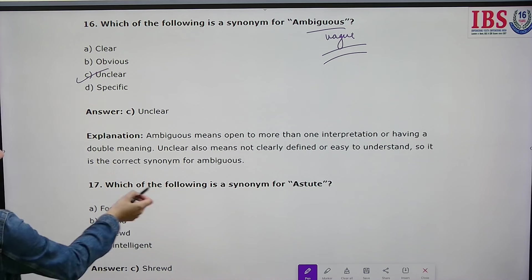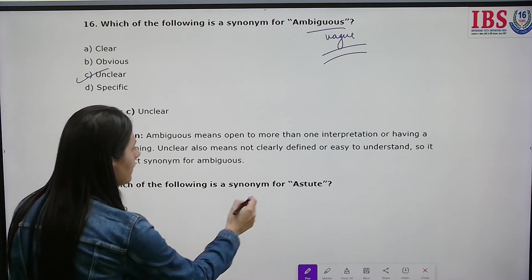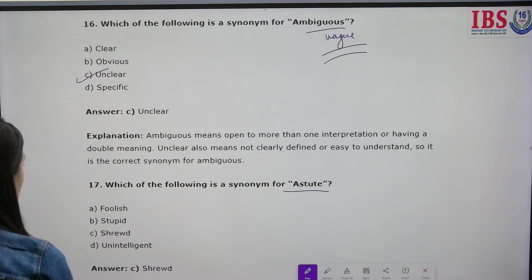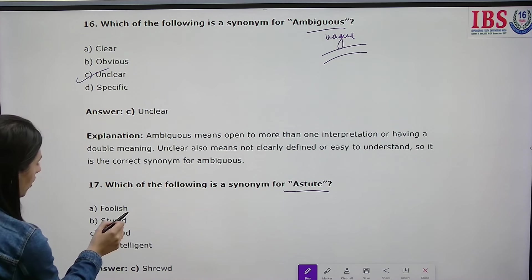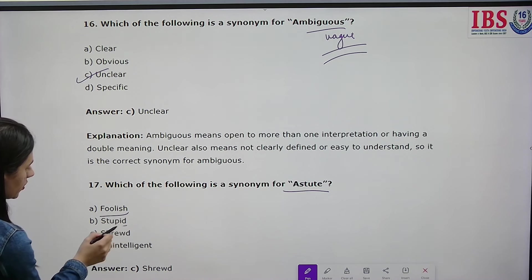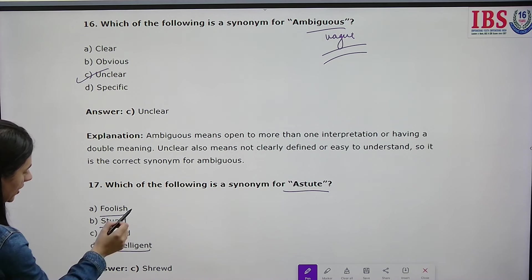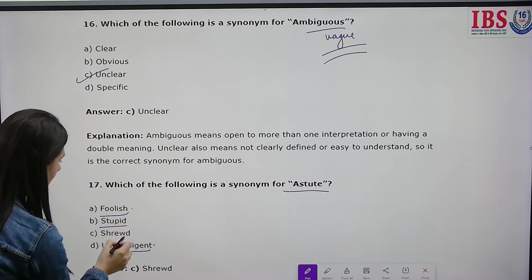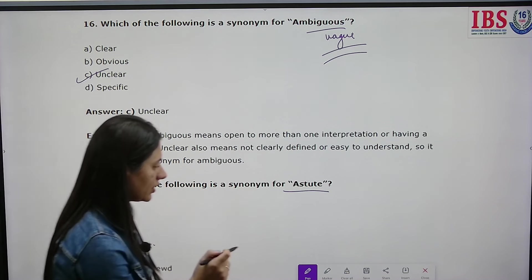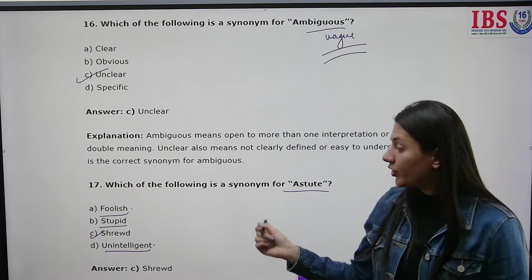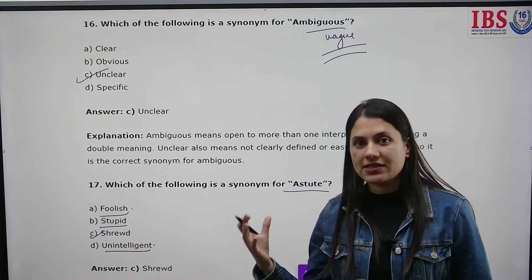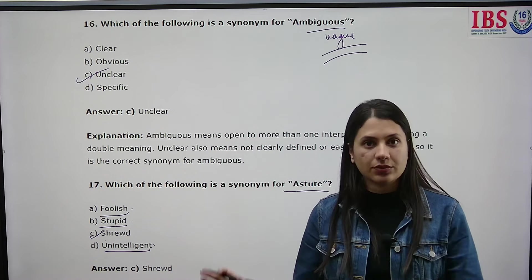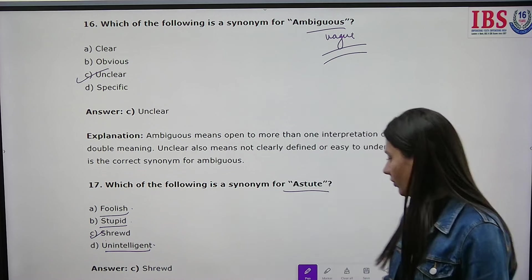Which of the following is a synonym for 'astute'? Astute means shrewd. The options are foolish, stupid, unintelligent, and shrewd. Foolish, stupid, and unintelligent all describe someone lacking sense. Shrewd describes a clever person. For example, 'you are very astute when you decide' — meaning you make decisions very wisely. So shrewd is the correct answer.